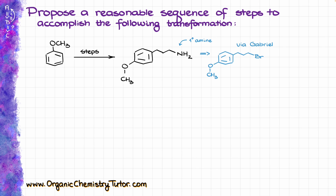One method that comes to mind is the use of a primary alkyl halide and adding nitrogen there via the Gabriel synthesis — classic, but a little bit cumbersome, so probably not the best way. Another synthesis of primary amines can be accomplished with reductive amination. If I had an aldehyde at my primary carbon, then by using ammonia with a reducing agent like sodium borohydride or something of that sort, I could potentially make my primary amine.